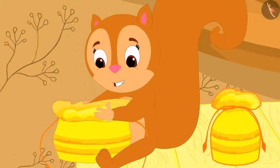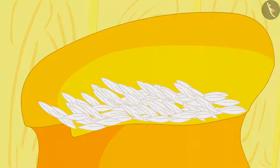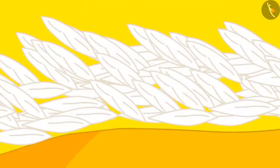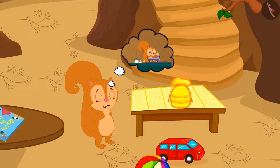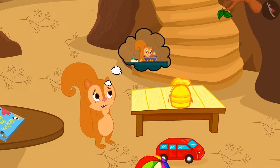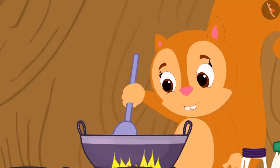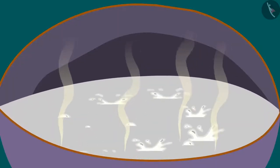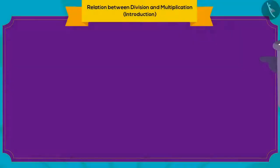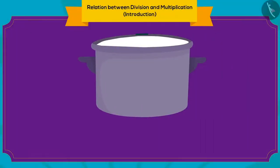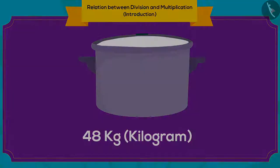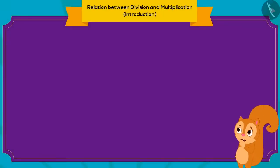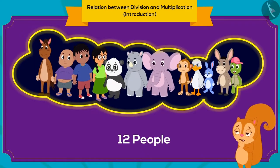Now, Chanda opened her second pouch and found some rice grains in it. She thought she could cook some kheer for herself. But as soon as she began cooking, the kheer kept increasing in quantity. At last, from those rice grains, Chanda managed to make 48 kg of kheer. She needed to divide that kheer among 12 people in the village.